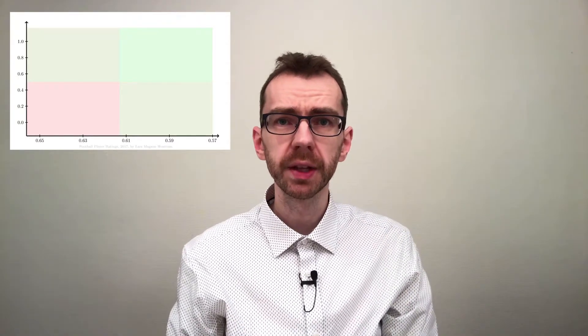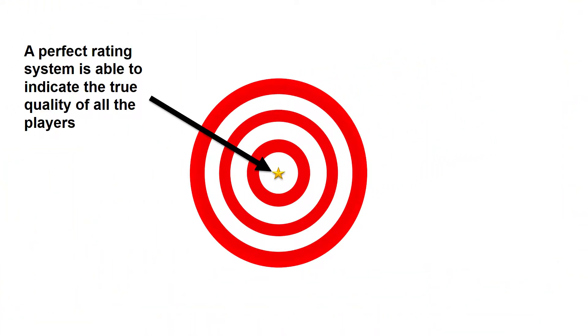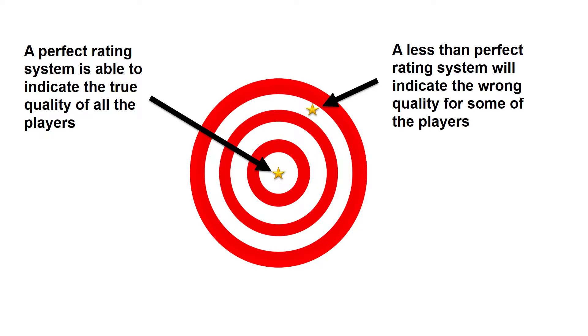We can illustrate the purpose of these two criteria using a target such as this one. The bull's eye can in this case be interpreted as a set of perfect ratings, being able to correctly rate all football players according to their actual quality. Less than perfect rating systems will tend to overvalue some players and undervalue some others, thereby leading to a slightly inaccurate ranking.